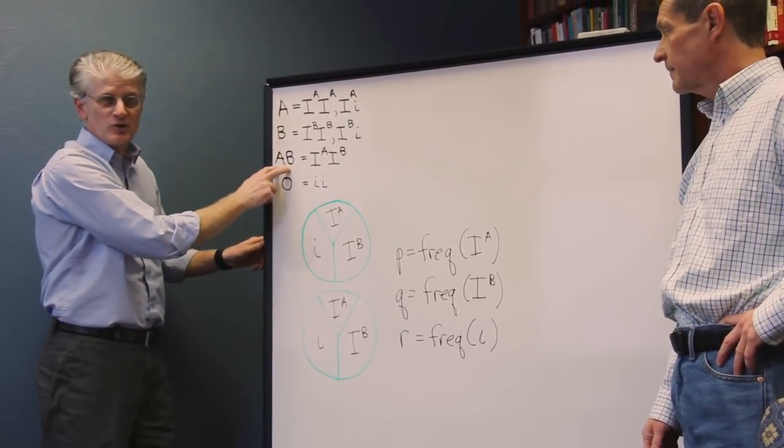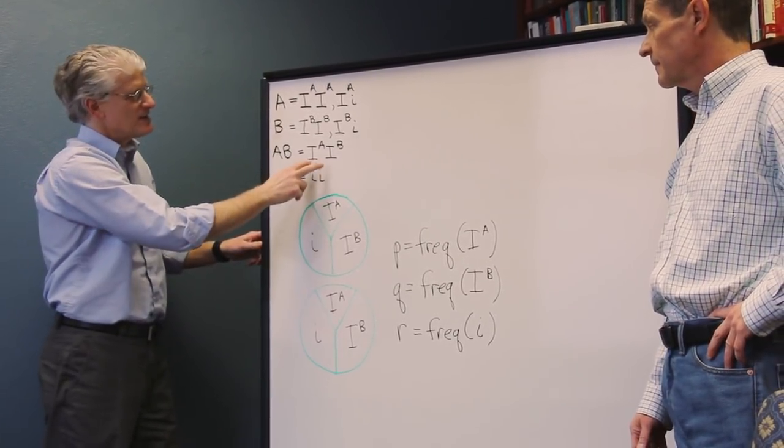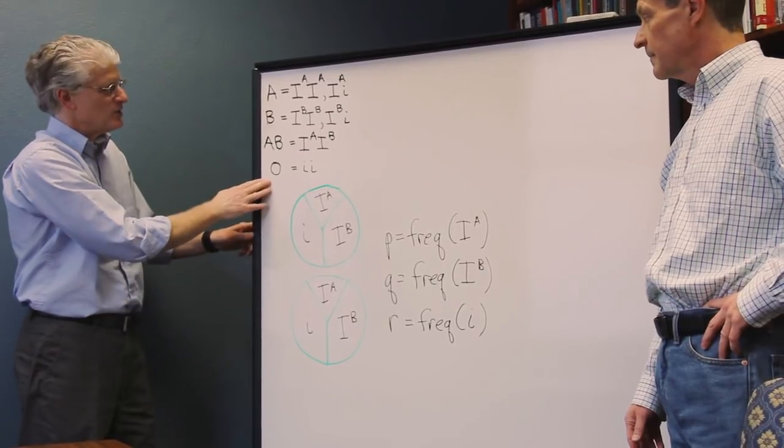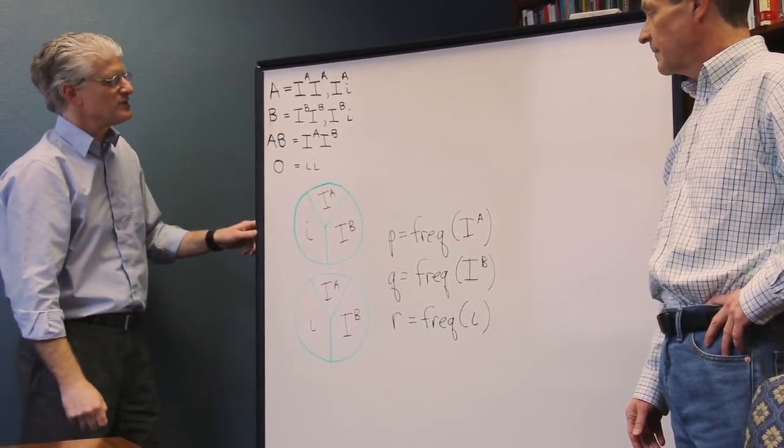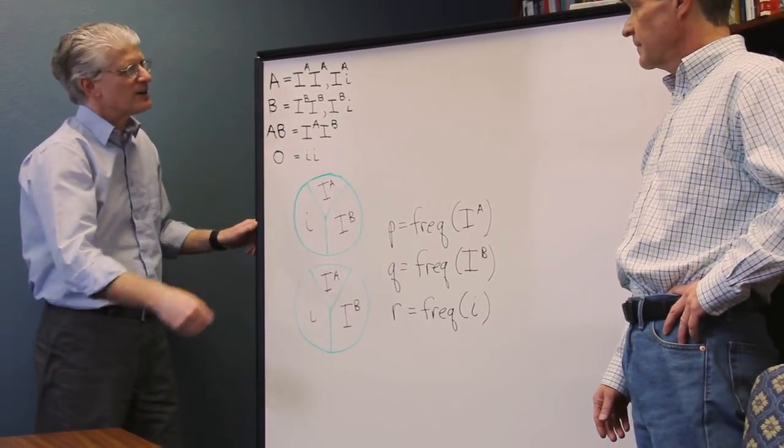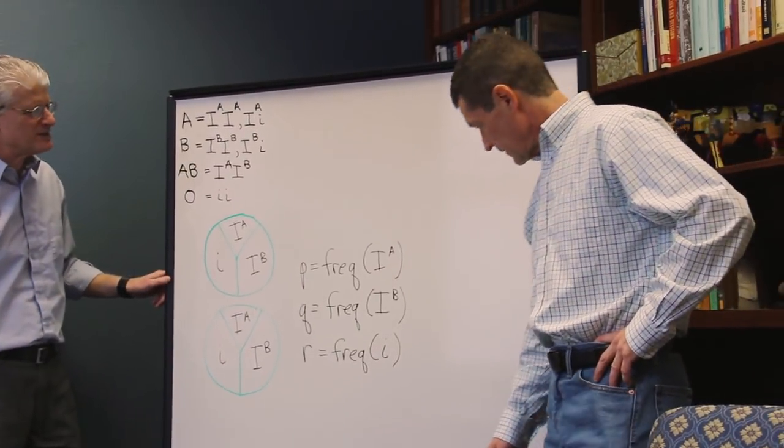The AB, the co-dominant form we talked about earlier in class, was IA, IB. And finally, the O type, homozygous for the two recessive alleles. And so, Mark, I'm going to let you take it from here to talk about some of these frequencies.